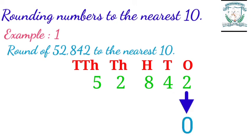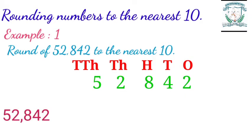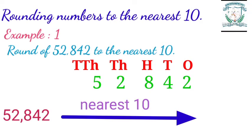If the digit in the ones place is less than five, then the digit in the tens place does not change and the digit in the ones place becomes zero. Here we have digit 2 in the ones place, which is less than five. So when we round off 52,842 to the nearest ten, we get 52,840.